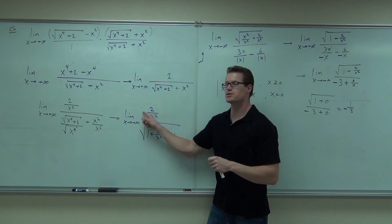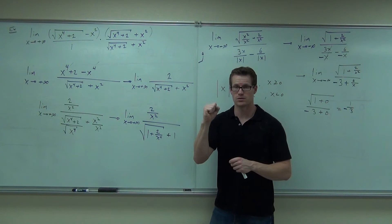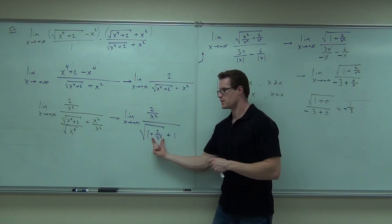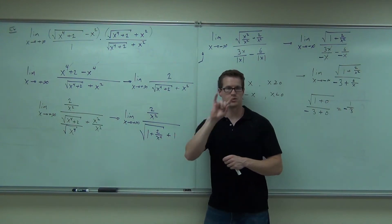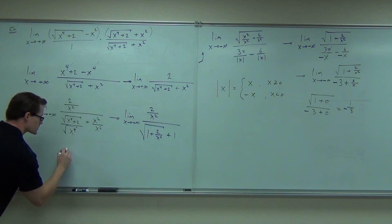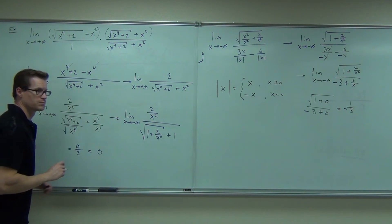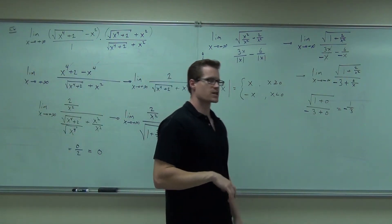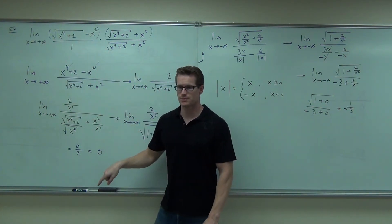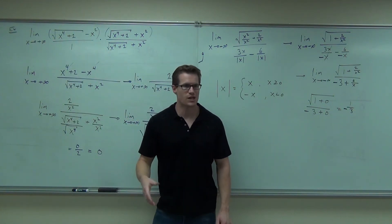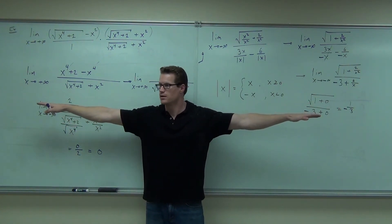Where does this go, ladies and gentlemen, when you're taking it to infinity? Is it okay to have 0 on the top of a fraction? Yes. Would you agree that the denominator goes to 2? So this equals 0 over 2, or 0. If I change that to a negative, nothing about this changes — no absolute value, nothing changes. That says the horizontal asymptote in both directions is at 0.